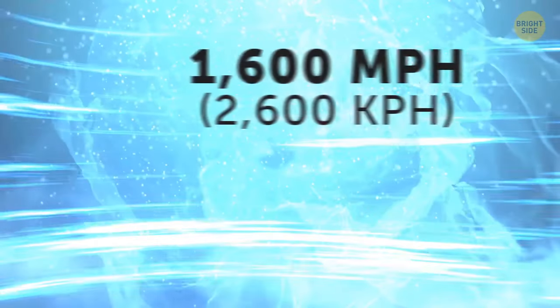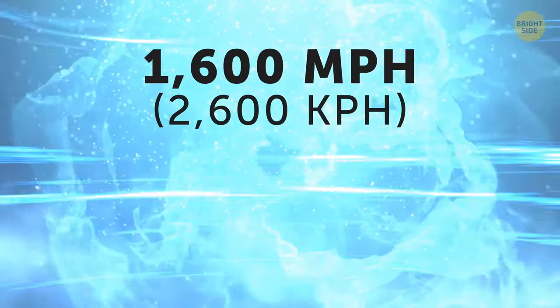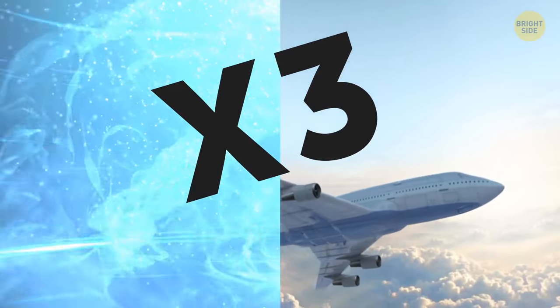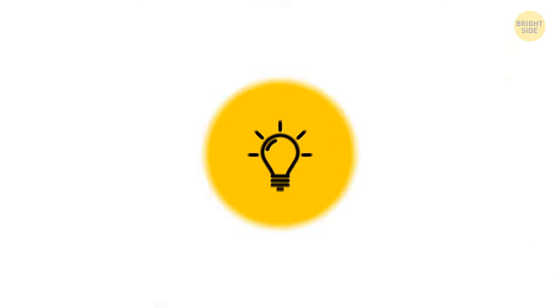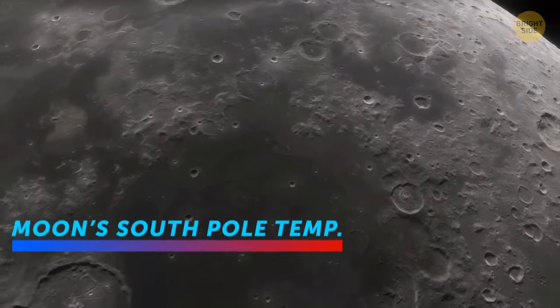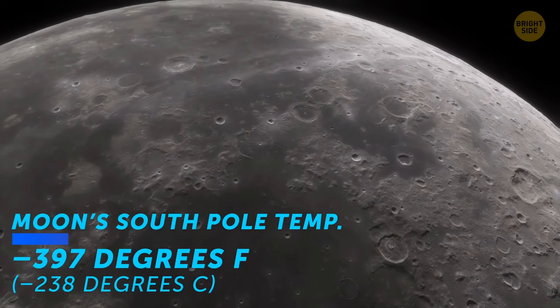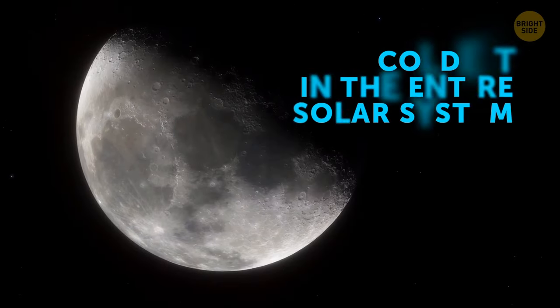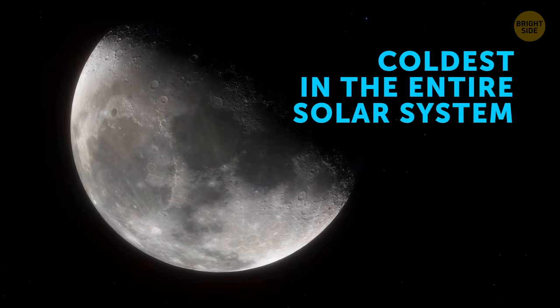The winds on Neptune reach the speeds of 1600 mph, that's three times faster than a commercial airplane. Temperatures at the Moon's south pole reach minus 397 degrees Fahrenheit, which just might be the coldest in the entire solar system.